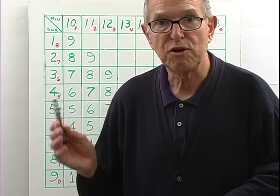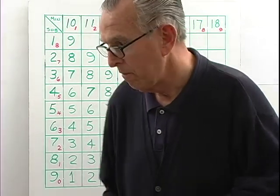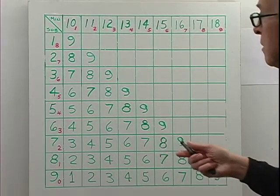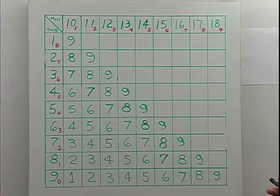We'll construct a subtraction table using our algorithm. In this top row here, the minuend number is a number from 10 to 18.